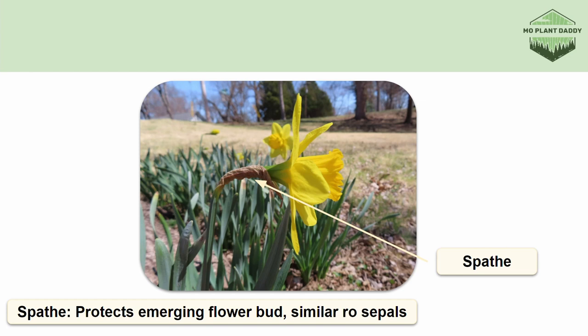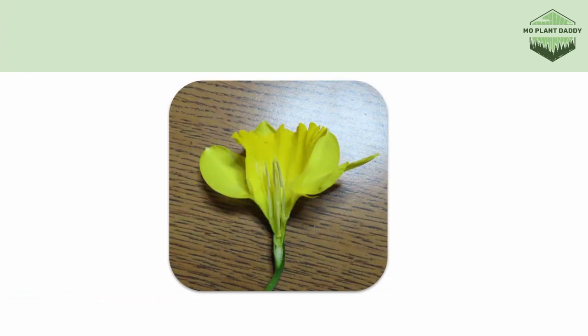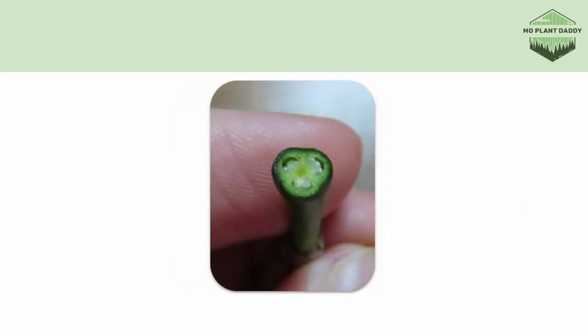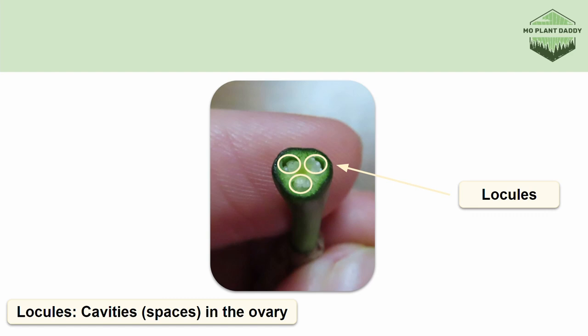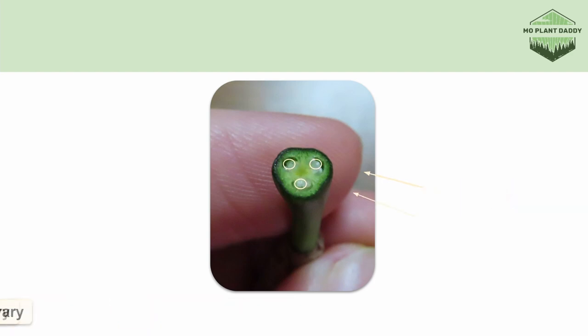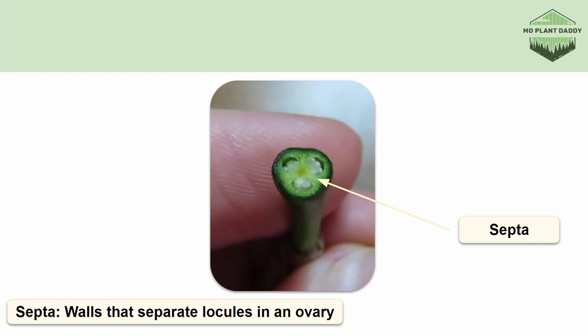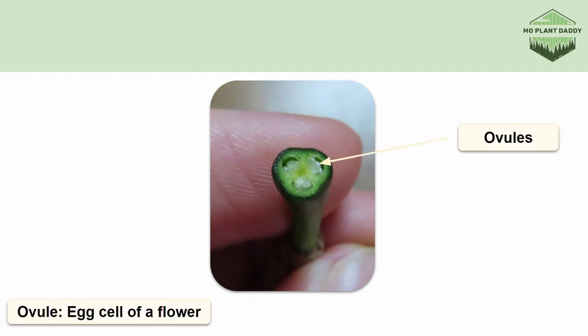Now that our daffodil is no longer protected we can cut it in half, then cut it transversely. Here we'll see three spaces in the ovary known as locules, which occur when three carpels fuse together — although a single carpel will have a single locule. We can see where the carpels are fused by the septa, which divide the locules. Finally, the little white dots inside of each locule are the ovules, which are the egg cells of the flower.